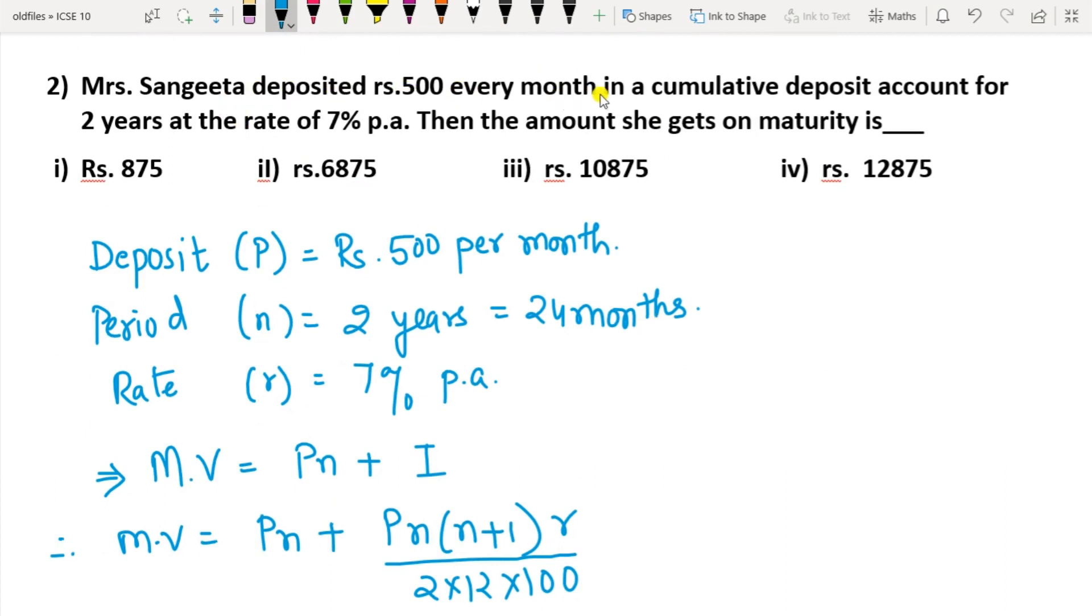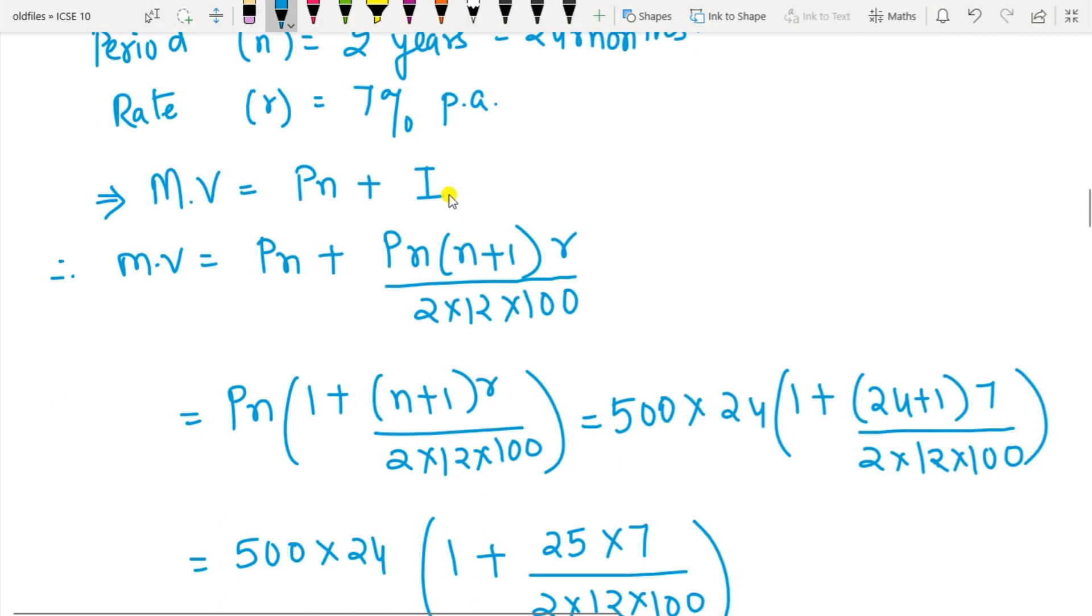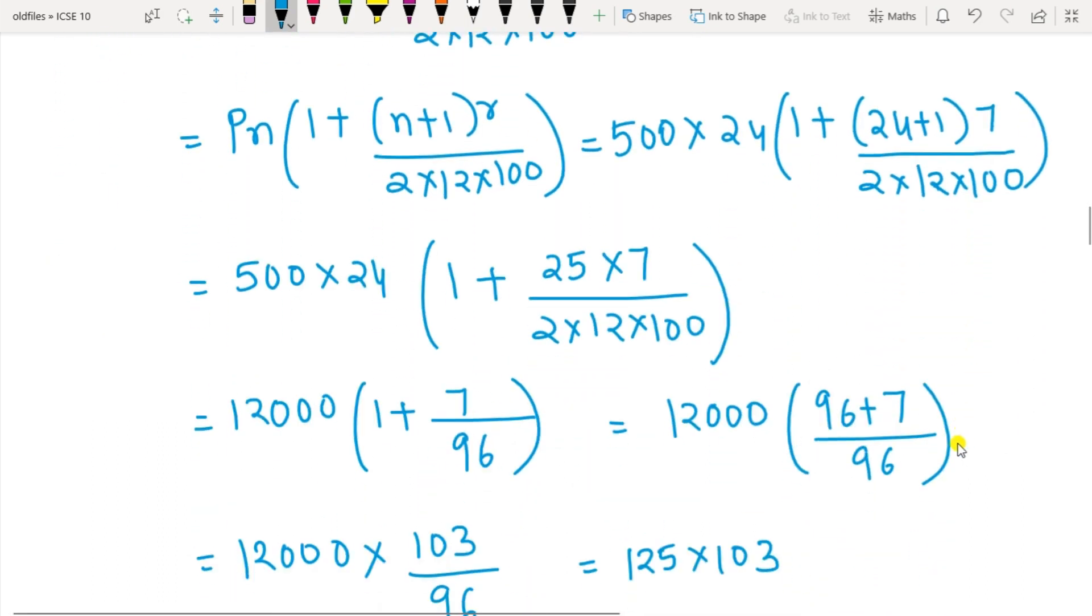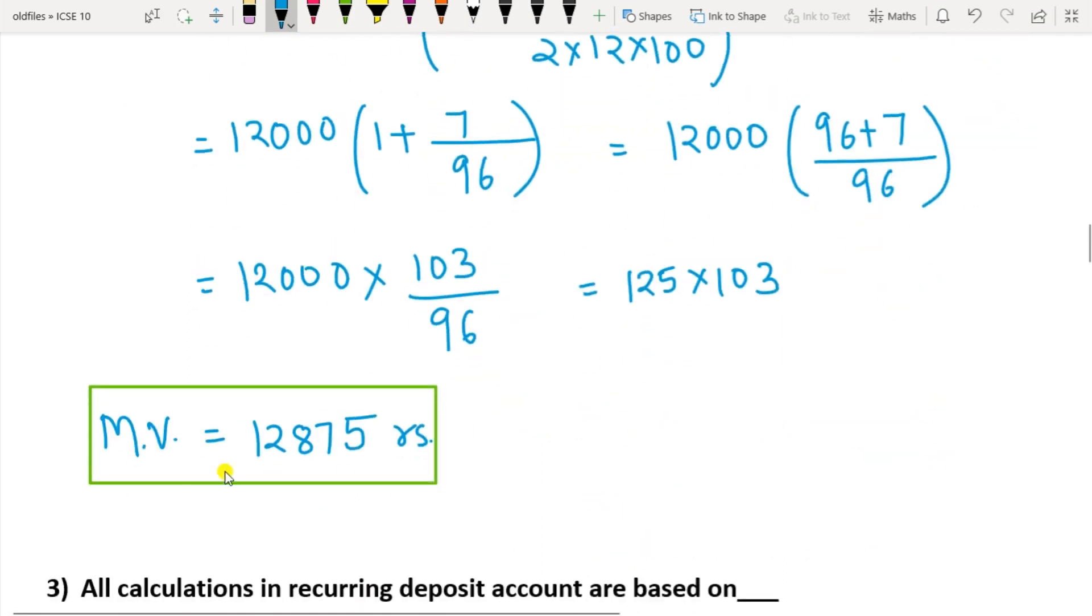Mrs. Sangeeta deposited Rs. 500 every month in a cumulative deposit account - it is written cumulative deposit account, so it means recurring deposit account - for 2 years at the rate of 7% per annum. Then the amount she gets on maturity. So here you have to convert it into 24 months and r is 7% per annum. Maturity value is Pn + I. Take out Pn common, this will be 1 + (n+1)R/(2×12×100). Substitute all the values here and take the LCM and solve it. This will be 12,000 × (1 + 7/96), and you get the answer as maturity value 12,875 rupees.